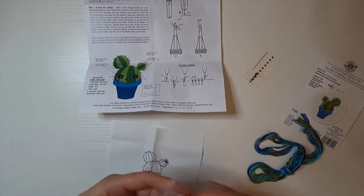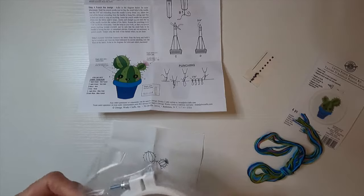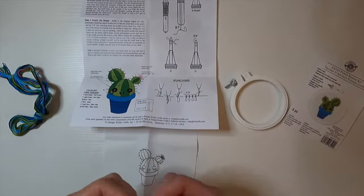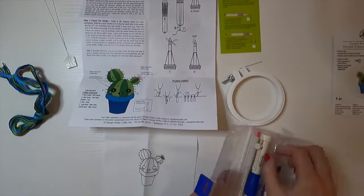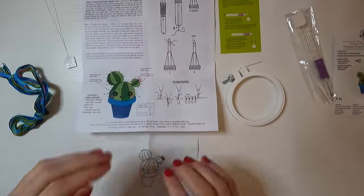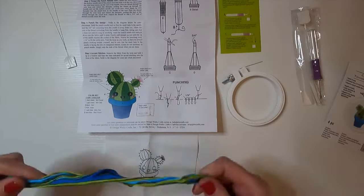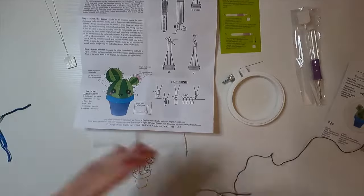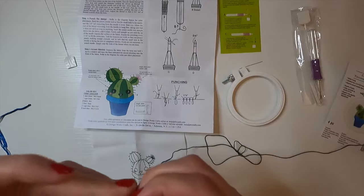I'm just going to get started by looking at the instructions and getting all my supplies together. First things first, I have to separate all of the embroidery floss strands one by one.